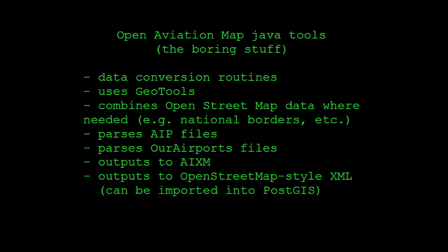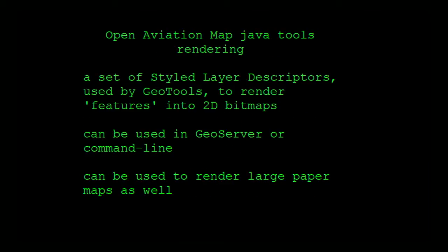Our Java tools are a lot of conversion routines - parsing XML files or text files and then outputting other XML and text files. The important thing is that they can recognize and understand complex definitions, like taking a national border and combining it with an airspace part, and then automatically output the proper airspace boundaries. We have a lot of rendering features built in - once you import this data into a spatial database like PostGIS, you want to render it to a bitmap. We're using a toolset called GeoTools, which has a styling language called Style Layer Descriptor SLD.